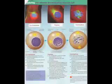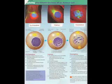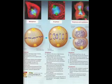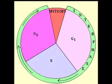Mitosis is a process of nuclear division in eukaryotic cells, in which one nucleus becomes two genetically identical nuclei. This progression is split into the stages of prophase, metaphase, anaphase, and telophase.